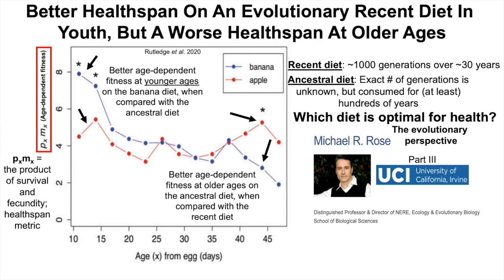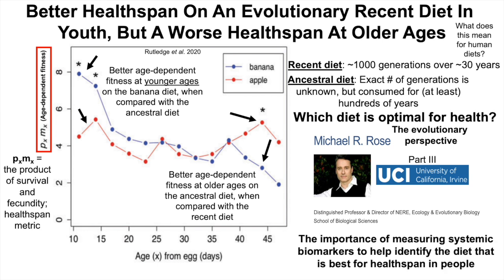It seems like there is better healthspan on an evolutionarily recent diet in youth, but a worse healthspan at older ages when compared with the ancestral diet. What does this mean for human diets in terms of the optimal diet for human health at older ages? And what's the importance of measuring systemic biomarkers to help identify the diet that is truly best for healthspan in people? With these issues in mind, let's return to our conversation with Dr. Michael Rose.